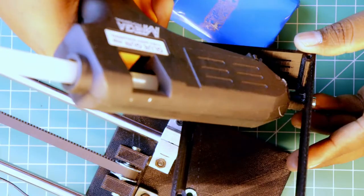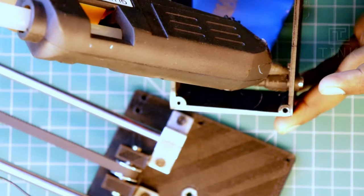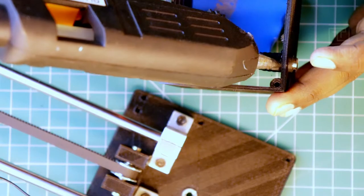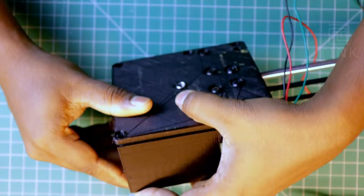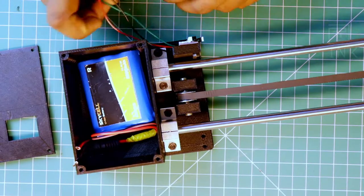Before we start assembling the whole thing, we have to start with fixing the battery DC jack to the side of the casing. Let's place this case on the electronics base plate. It looks like it is shaping up well.